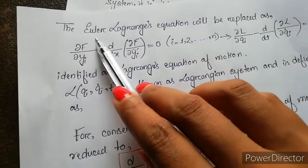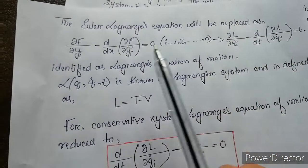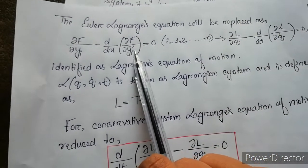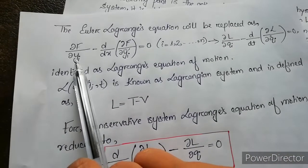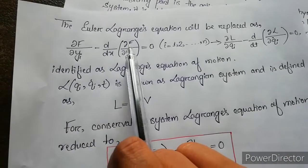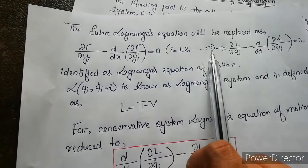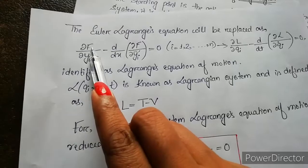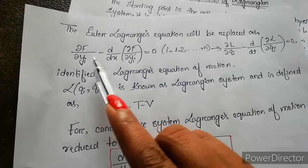This is the Euler-Lagrange equation in terms of f: del f by del yi minus d by dx of del f by del yi prime equals zero, where i equals 1, 2, 3, up to n. Here f is replaced by L, so we have del L by del qi.